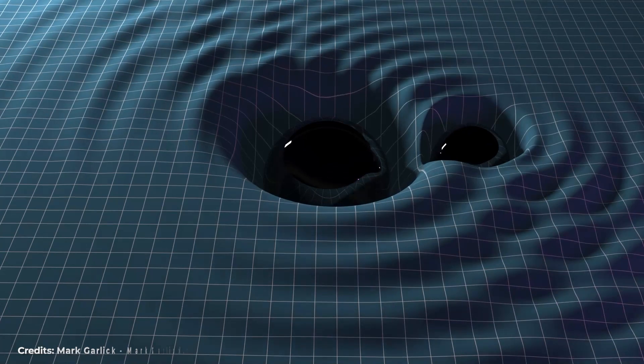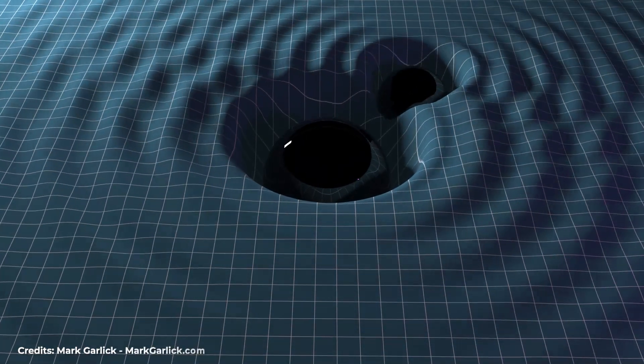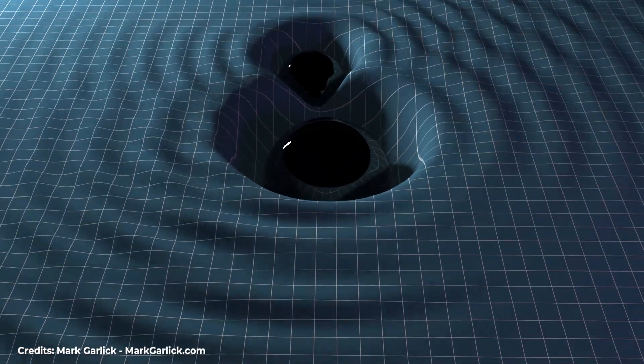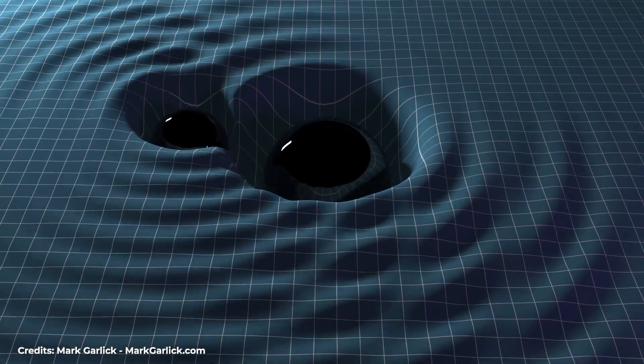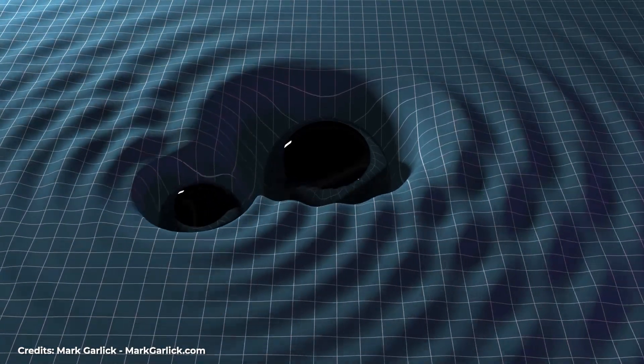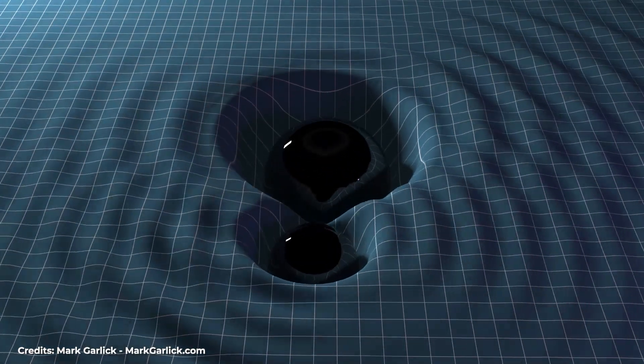Another example is the observation of gravitational waves from merging black holes. These waves provide indirect evidence of the properties of black holes and help us understand how information might be encoded and retrieved.